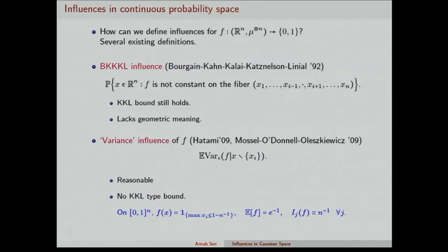That's all I wanted to say about discrete spaces. Now, the natural thing to look at is continuous spaces — say, the Gaussian space, the product Gaussian space. Can we define influences there? Of course we can. There are actually several existing definitions; I will talk about two, but there are many more. One is from the BKKKL paper, where they introduced the following definition of influence: you take the probability that f is not constant on the fiber of the point x along the j-th direction. That probability is your j-th influence.